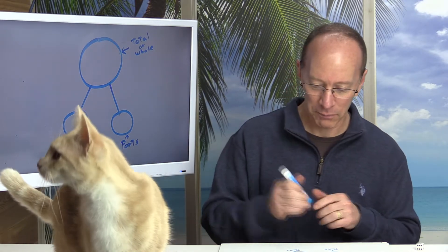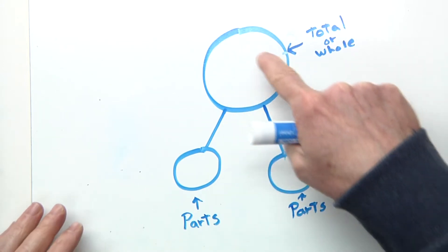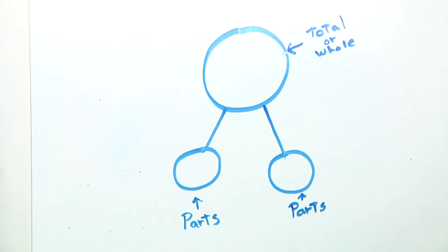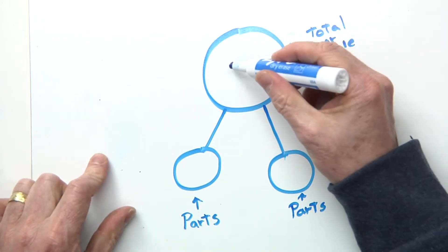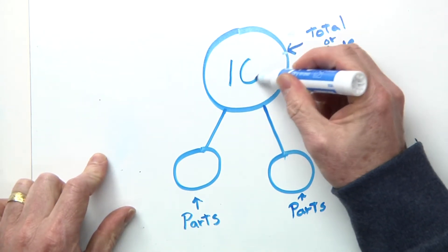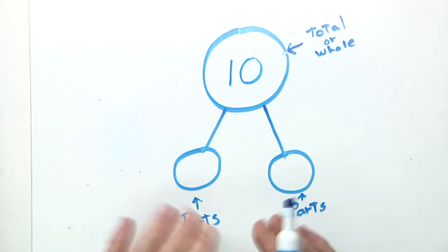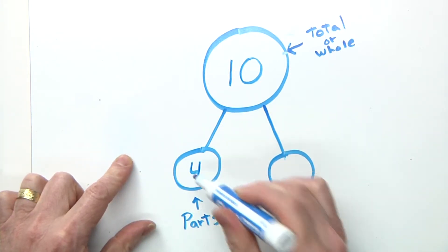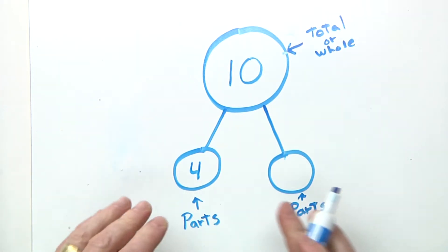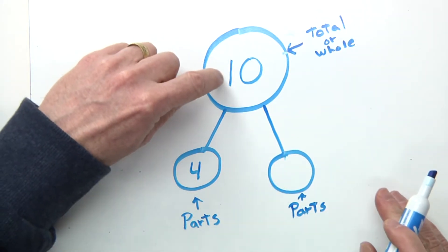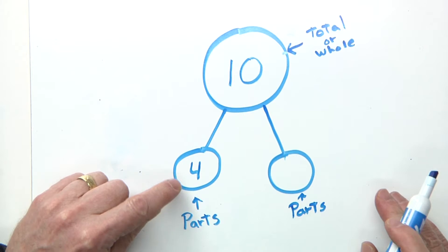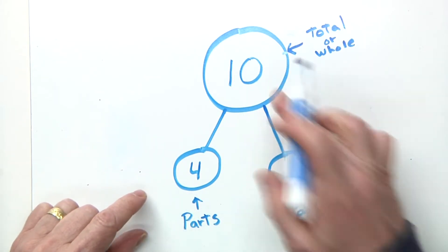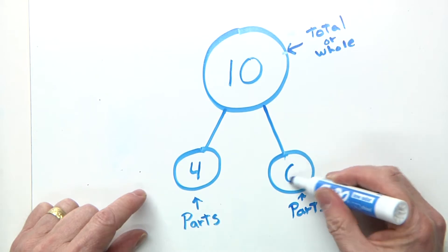Let me explain here. You usually will have a big circle, and then you have a line down to two circles like this. And you might have a number in the middle, which would be 10. And on some homeworks, they'll have a number here, like four. So you have to have a relationship between the total here — this is the total and the parts. So you can see you're going to have to have four plus some number equals 10, and that would be six.